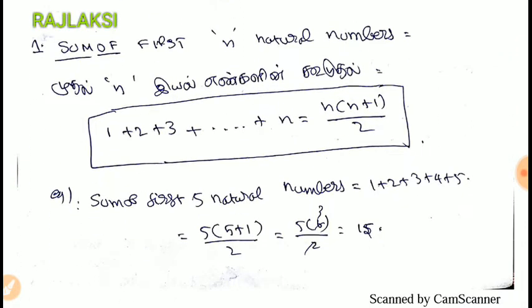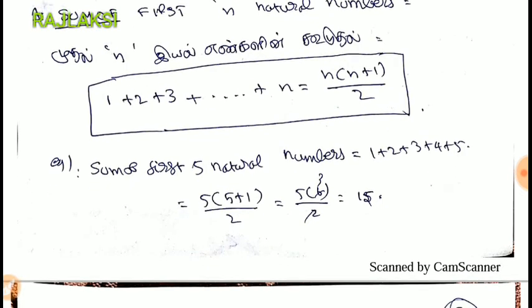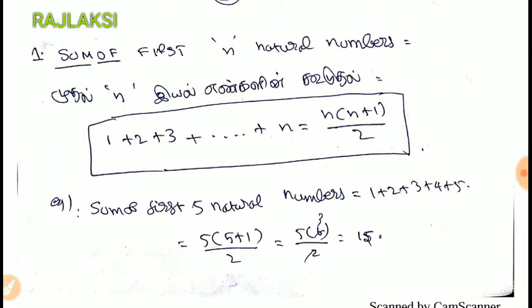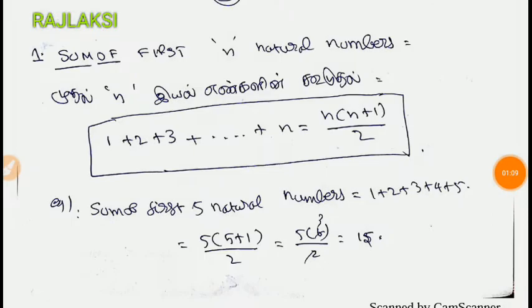Now let's talk about formulas. As I mentioned, I will show you a normal shortcut. First, for natural numbers — what is the formula? 1 plus 2 plus 3 plus N. The formula is N into N plus 1 divided by 2. We can also use a cube and a whole square with N into N plus 1 divided by 2.